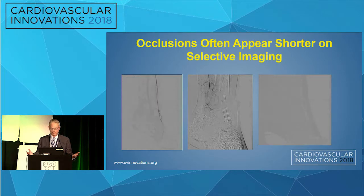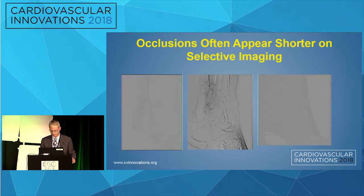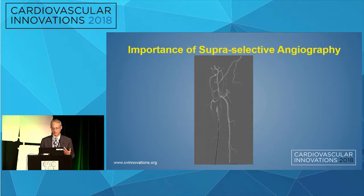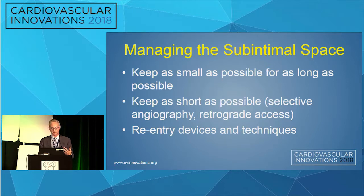One technique I find very helpful is super-selective imaging, which is very useful in revascularizing below-knee occlusions. Often the occlusion is much shorter than you think when you have a catheter as deep into the arterial bed as possible, both retrograde and antegrade. In one case I was struggling retrograde from the perineal to cross, but a super-selective injection retrograde identified a patent infrapopliteal artery below-knee popliteal artery and allowed us to cross successfully. Operators treating below-knee occlusions have to be good at the sub-intimal space. I want to keep the sub-intimal space as small and as short as possible, and you must be familiar with reentry devices and techniques to reenter the true lumen.